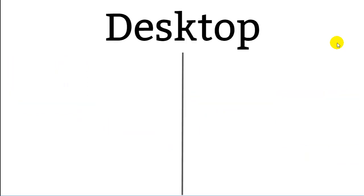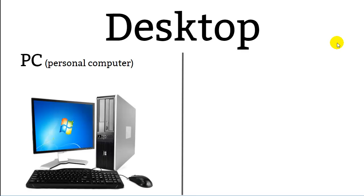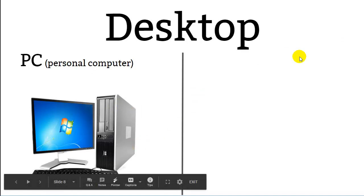There are two different kinds of desktop computers, and it's important that you know these two — I hope you're taking a few notes. The first is the personal PC. A personal computer, called a PC, is like what we have at school: a big box computer, a monitor, a keyboard, a mouse, and so on.